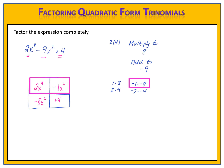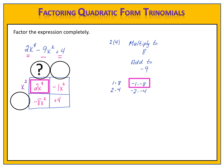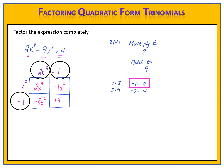Now I look across the top. The greatest common factor of 2x to the 4th and negative 1x squared is simply x squared. I use multiplication to fill in the other positions. x squared times 2x squared is 2x to the 4th. x squared times negative 1 is negative 1x squared. Finally, 2x squared times negative 4 is negative 8x squared. I double-check: negative 1 and negative 4 multiply to give a positive 4. ✓ My factors are 2x squared minus 1 and x squared minus 4.